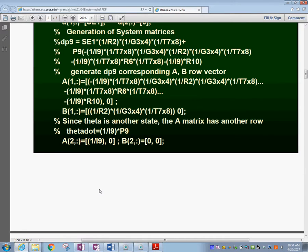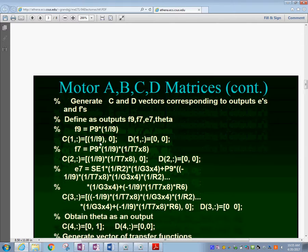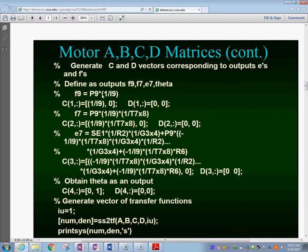In this case we have made an additional state variable called theta, which would be the angle variable, and we want to put that also as a state variable. In this case we are adding one, and then we go and define the outputs f9, f7, and e7. Those are the equations for those outputs, like this one f9.